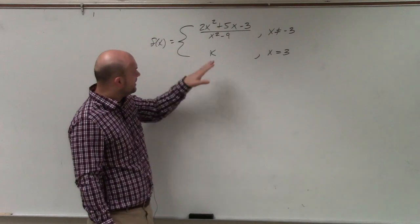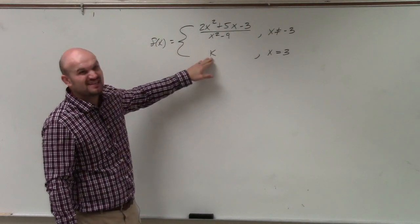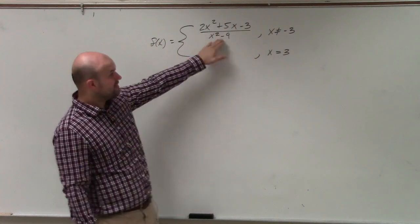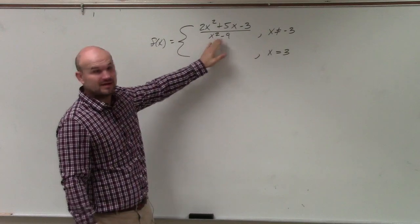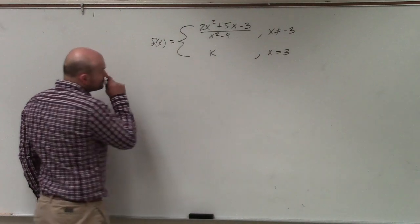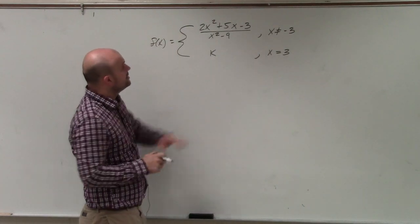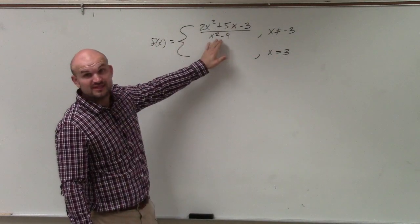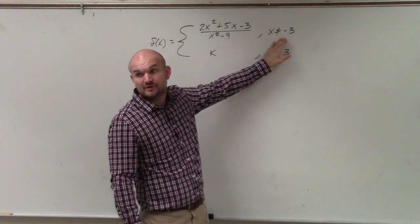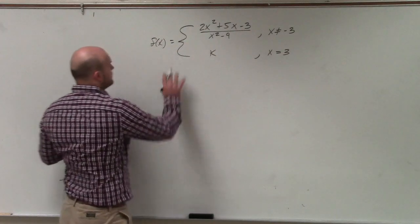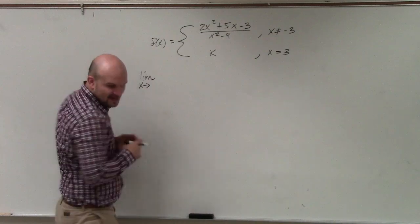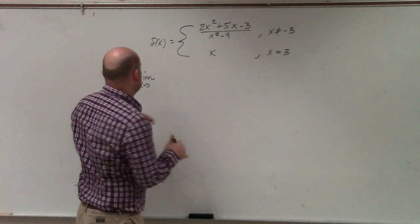So we're looking for the value that's going to make this continuous. Because we know right now this function is not continuous. This value we know has discontinuities — we just don't know which ones they are. And we know that this discontinuity happens at negative 3, or at least one of them. So let's go ahead and first evaluate the limit as x approaches negative 3.